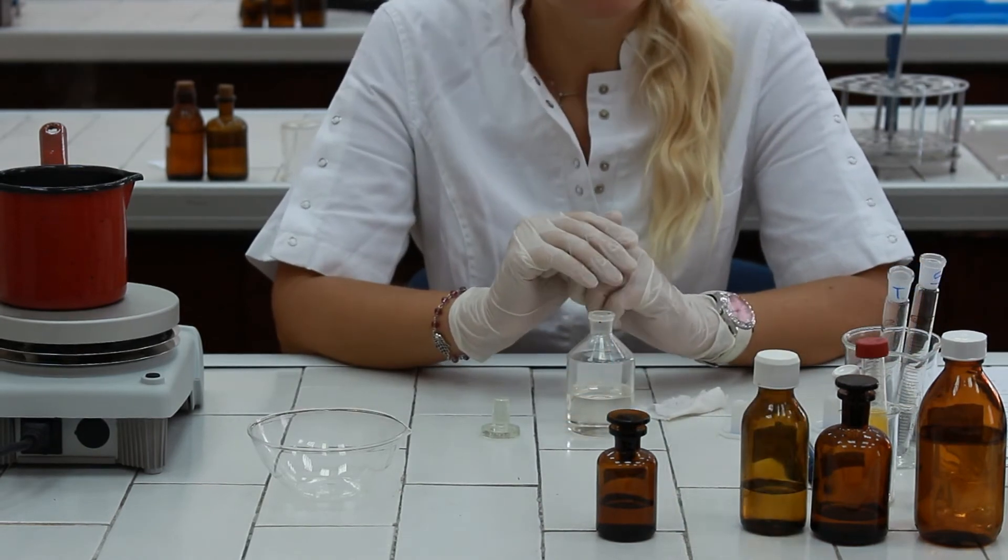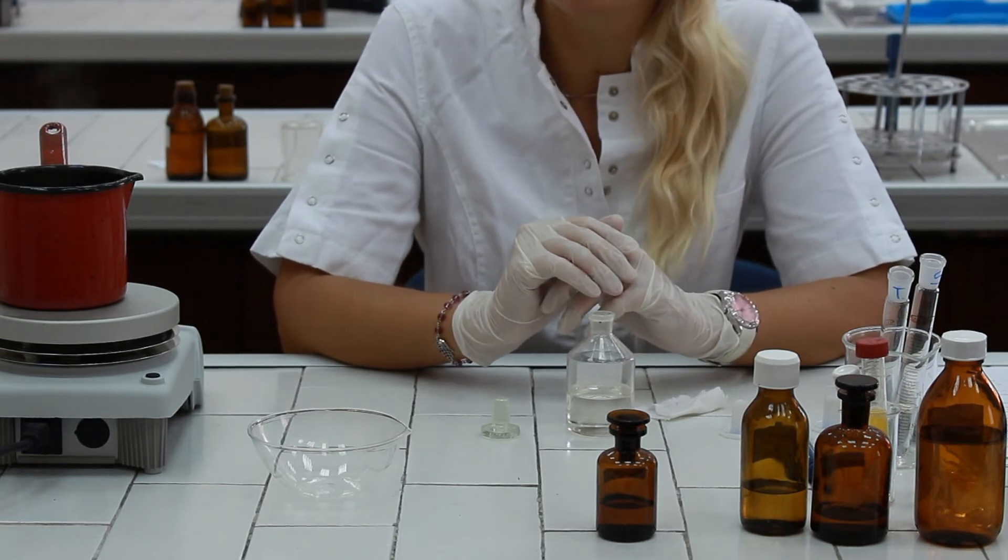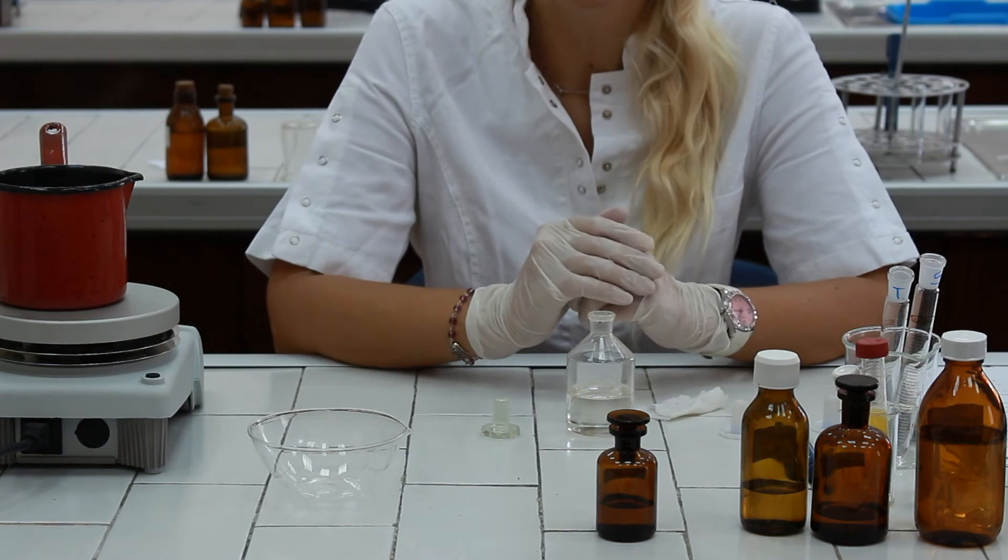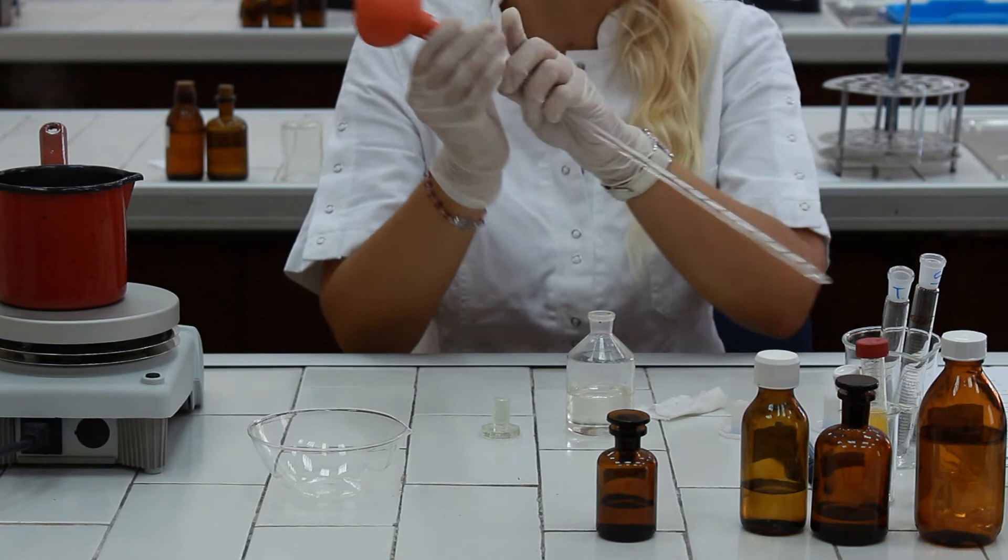After we prepare the chloroform solution of the cholesterol, now we have to perform the Lieberman-Burchard colored reaction. We need to put 2 ml of acetic anhydride to each of those graduated cylinders.